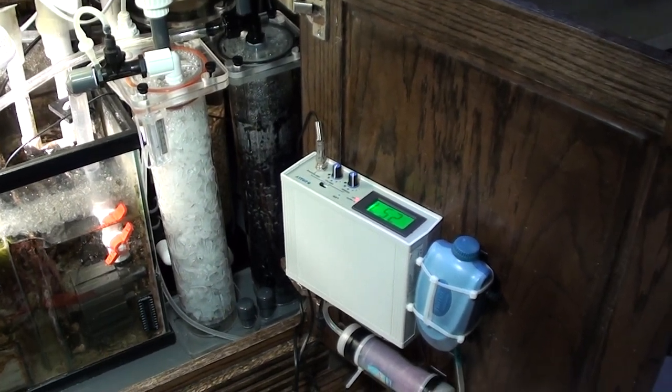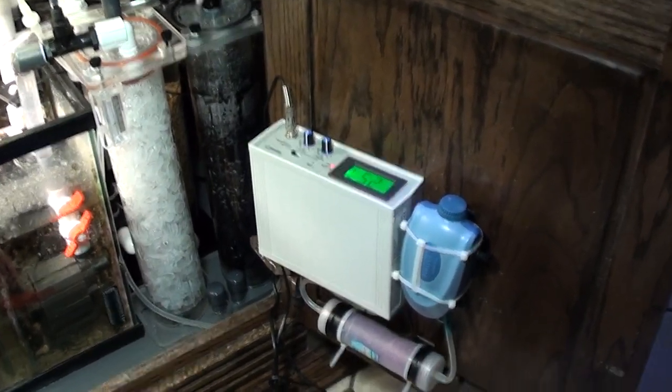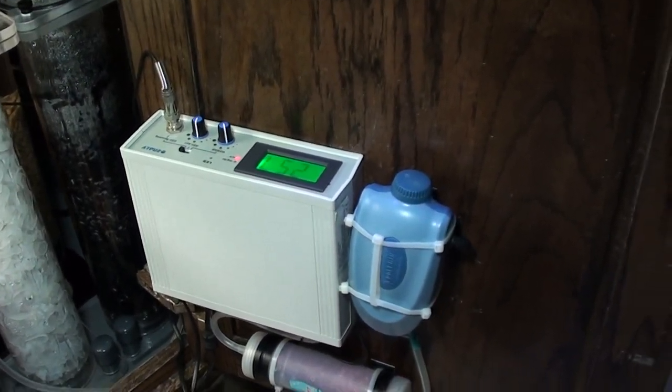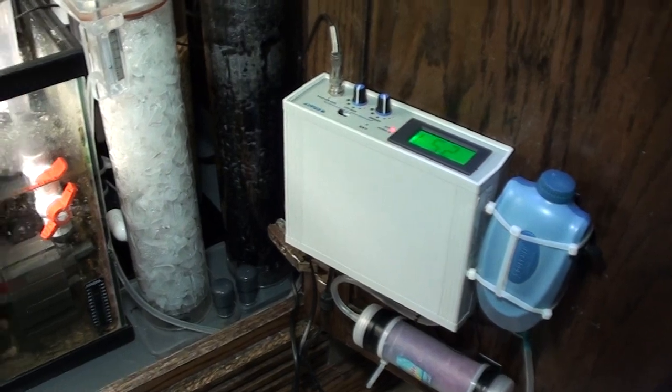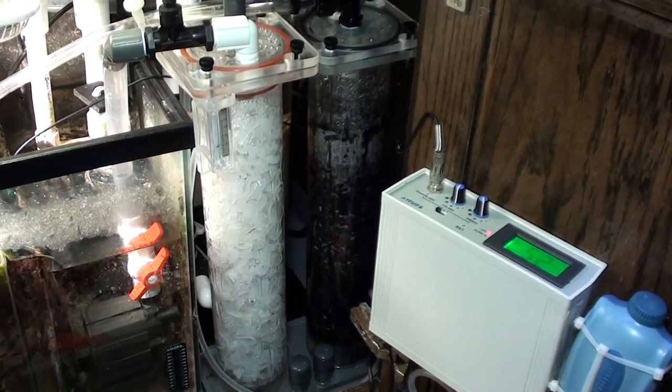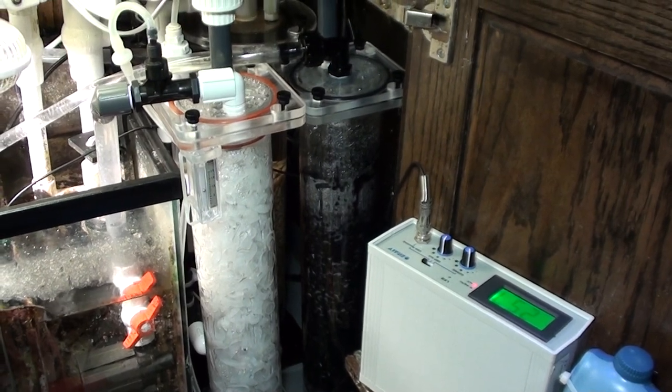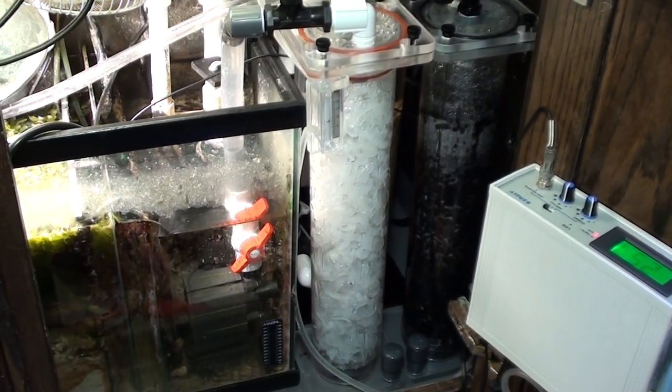This video is about my ozone reactor setup. Over here on the door you can see the ozone generator, an air pump, and an air dryer. The reactor is the one with the white polyfill in the middle there, and then the carbon reactor to the right of it. It pumps the water.